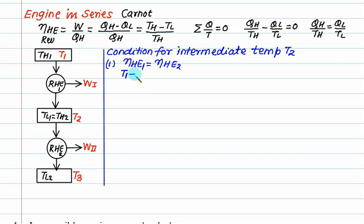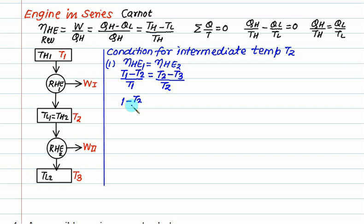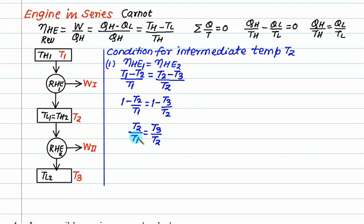For engine two, source temperature is T2 and sink temperature is T3, so efficiency equals T2 minus T3 divided by T2. Setting the two efficiencies equal: one minus T2 by T1 equals one minus T3 by T2. The ones cancel and the negatives cancel, giving T2 by T1 equals T3 by T2, so T2 squared equals T1 times T3, meaning T2 equals the square root of T1 times T3, which is the geometric mean of the source and sink temperatures.